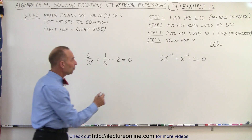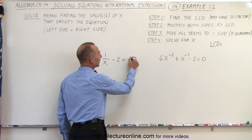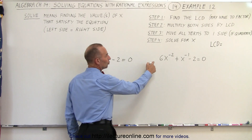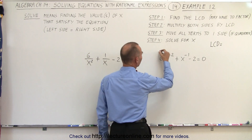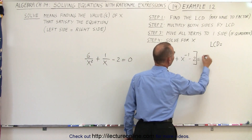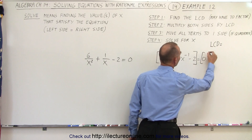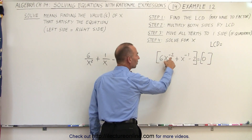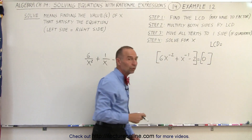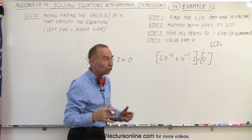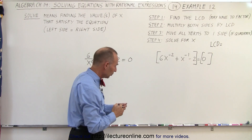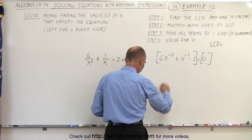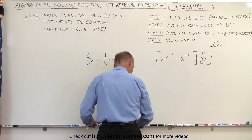But whenever we have a problem like this, there's kind of a shortcut method. What you're going to do here is you're going to multiply both sides of the equation by x to the positive exponent of the largest negative exponent that you find. In other words, if this is x to the minus 2, you're going to multiply